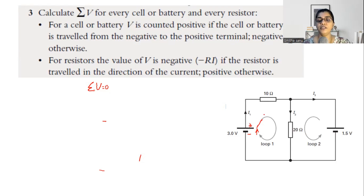If you move in the direction of current — for example, moving in the loop in the clockwise direction means you are moving in the direction of I1 — then the potential across the 10 ohm resistor is negative. Similarly, if I go through the loop, the potential across the 20 ohm resistor is also negative, and the total is equal to zero.